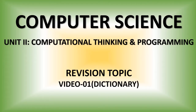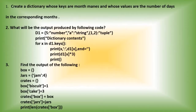Today we can discuss a few questions from the chapter on dictionaries. We studied about dictionaries. A dictionary is a combination of key and value, and we also studied certain methods of dictionaries. Let's go through the first question.